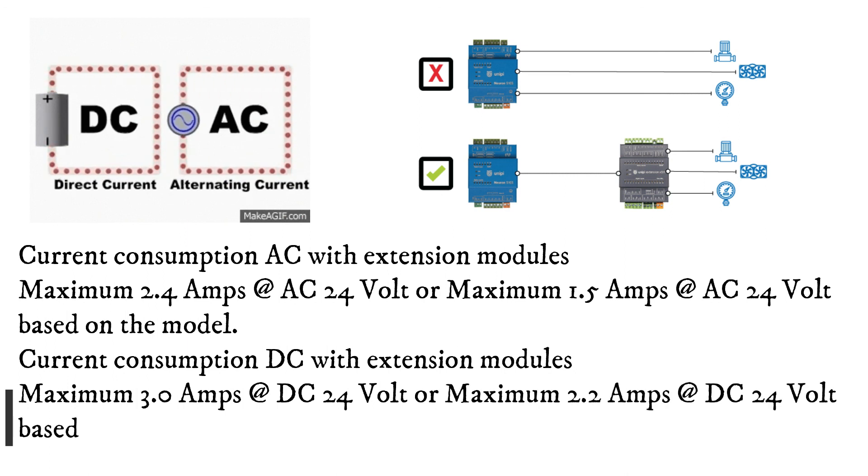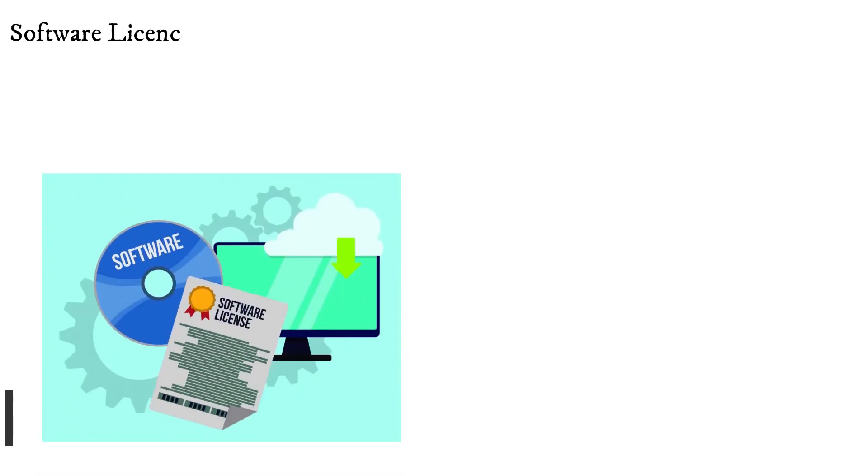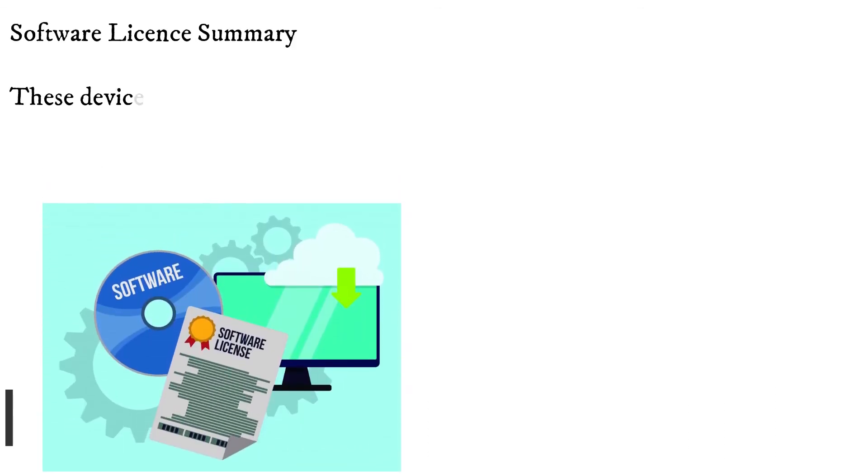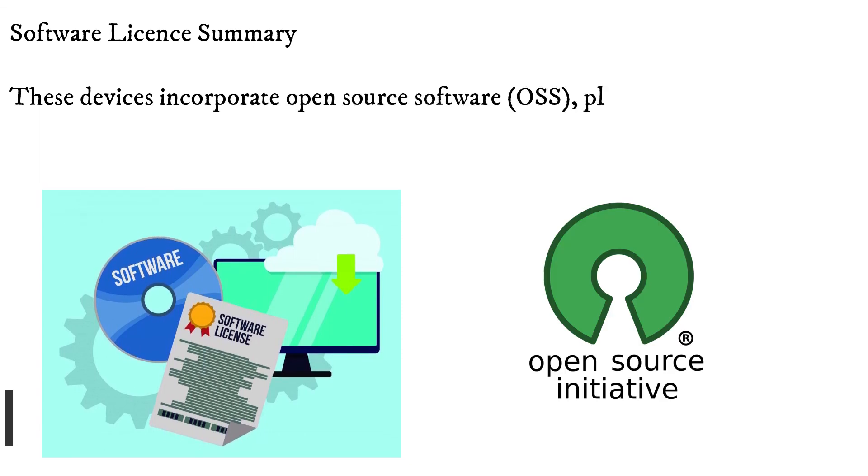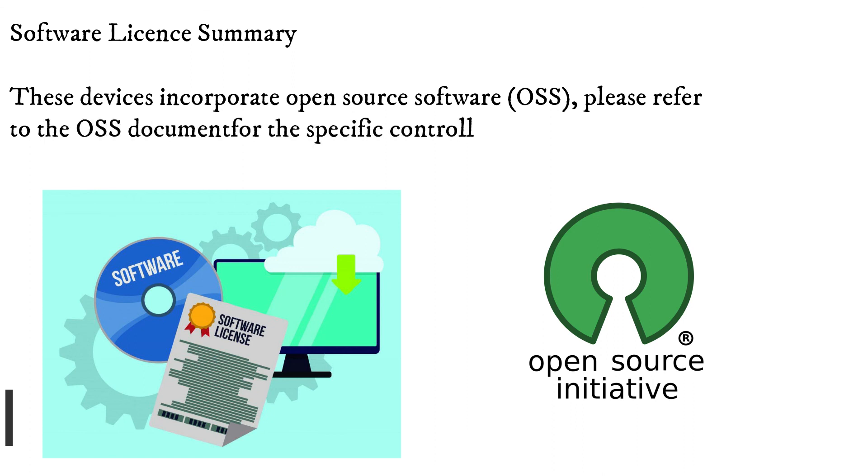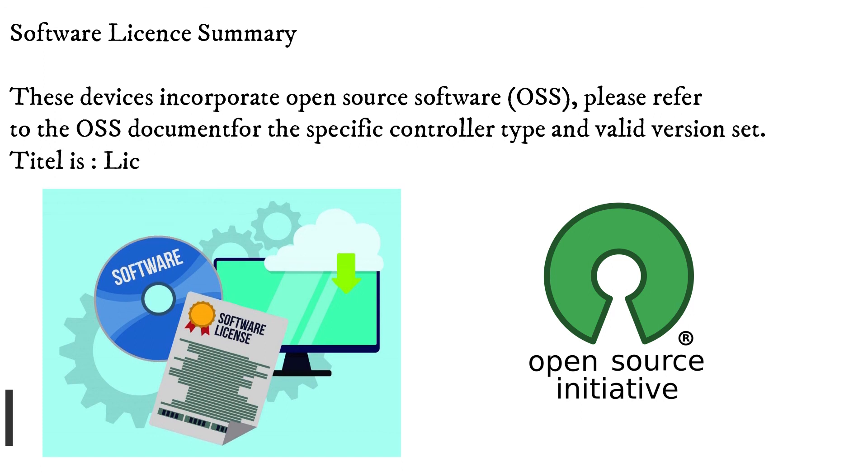Software license summary: Climatix C600 controllers. These devices incorporate open source software. Please refer to the OSS document for the specific controller type and valid version set.